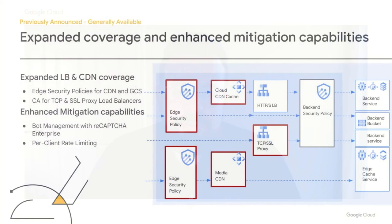In case you missed some recent announcements earlier in the year, we recently announced expanded Cloud Armor coverage to protect more workload types by introducing support for the TCP and SSL proxy load balancers, as well as launching edge security policies to protect CDN and GCS workloads. We have expanded our detection and mitigation capabilities, introducing the ability to detect and stop bot threats with bot management featuring a deep integration with reCAPTCHA Enterprise, as well as the ability to enforce per-client rate limits, which was leveraged to stop the attack we talked about earlier. All of these new expansions and capabilities are generally available.